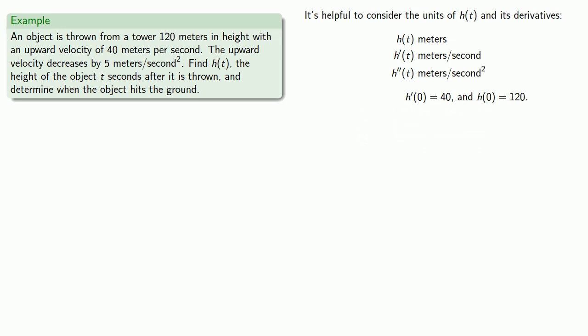Finally, we're given that the upward velocity decreases by 5 meters per second. Now this information is not associated with any specific time — it's not the initial upward velocity. So this looks like the second derivative at any value of t is equal to 5. Well, not quite — note the use of the term 'decreases by,' which suggests our velocity should be getting lower and lower. So this second derivative should be negative: h double prime of t equals minus 5.